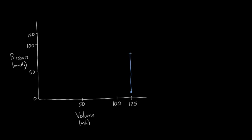As pressure rises, it gets to about this point, and then blood starts entering the aorta. As it enters the aorta, pressure rises even higher, and the volume starts to fall as blood leaves the left ventricle. The blood remaining in the left ventricle is around 50 mL. Then relaxation begins — pressure falls — and a little bit of blood starts entering the left ventricle, so pressure continues to fall while volume starts rising, until it's ready to do the whole thing all over again.